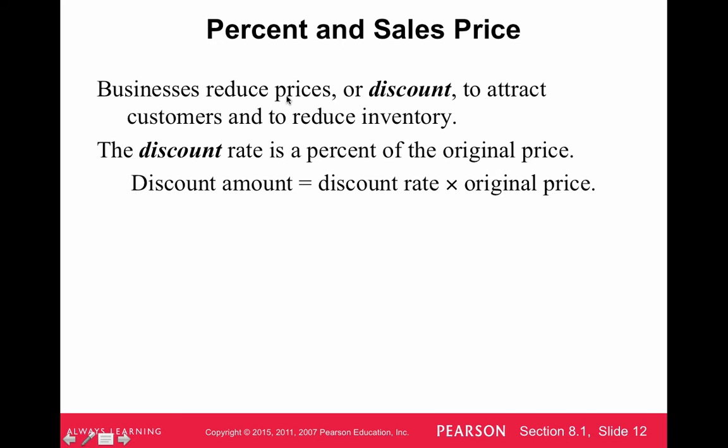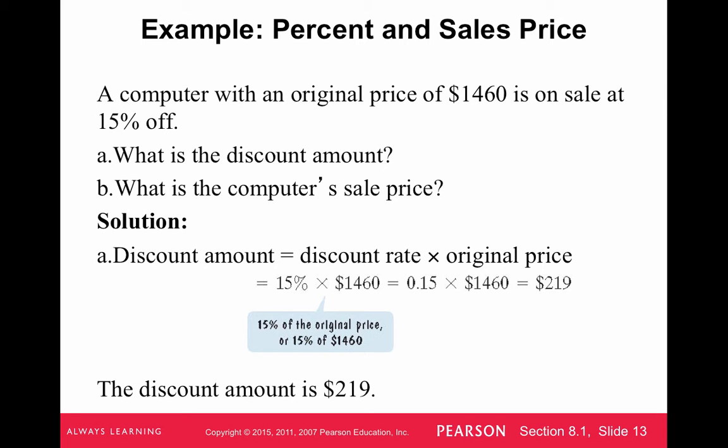A lot of times you'll see discounts in sales and stuff like that. So, the discount amount is just the discount rate times the original price. This is very much like tax, but just we're going to be subtracting it at the end. So, it says a computer with original price of $1460 is on sale at 15% off. What is the discount amount? What is the computer's sale price? So, in order to do this, if you want to figure out the discount amount, you just find 15% of $1460.